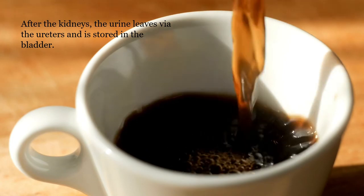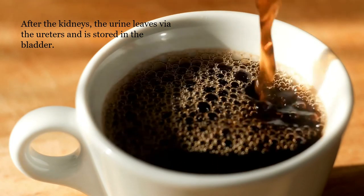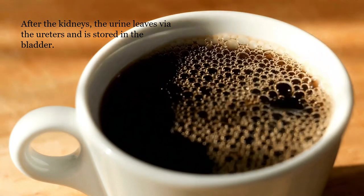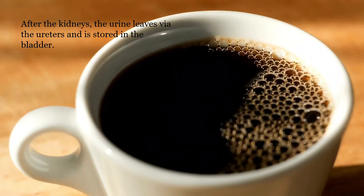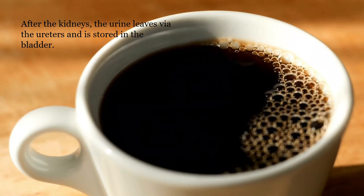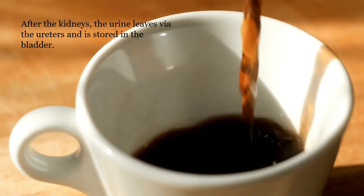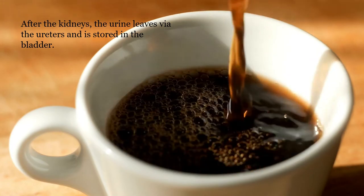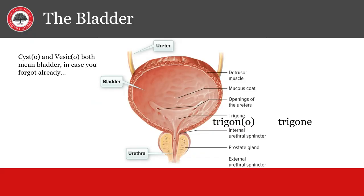Just like a cup, the bladder receives urine for storage until urination can take place. It receives urine from the kidneys by way of the ureters and then voids the urine through the urethra at the time of urination. Remember cysto and vesico both mean bladder. Trigono refers to the trigone — this is where the ureters enter the bladder, and if this area becomes inflamed it's called trigonitis.